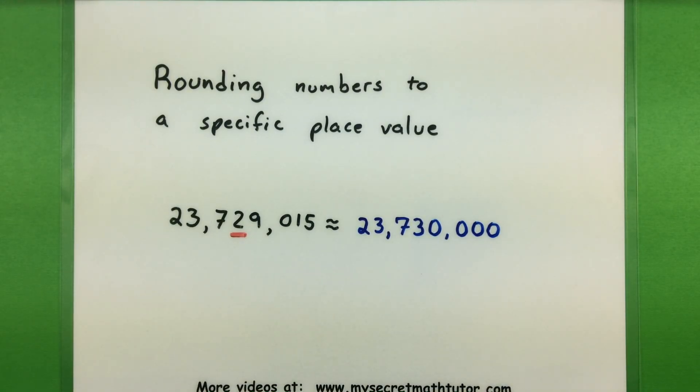A good example of what I'm talking about is taking a number like 23,729,015 and instead of rounding it to one of these places out here, looking for some other specific place like the 10,000th place and rounding it to that one. If I take a number like this and round it to the 10,000th place, it turns into 23,730,000.